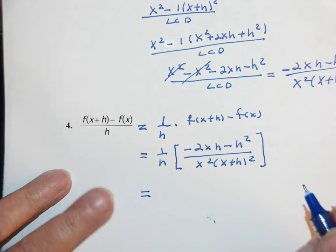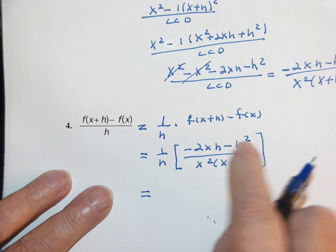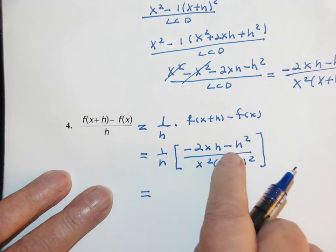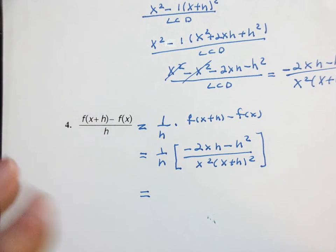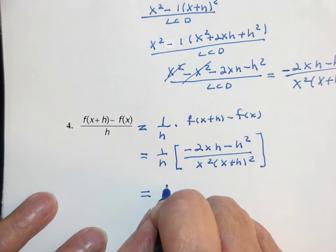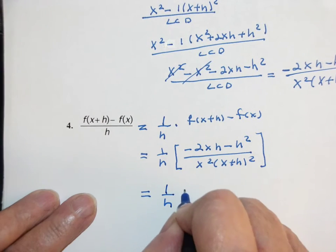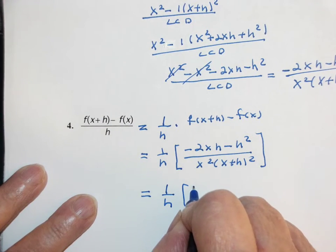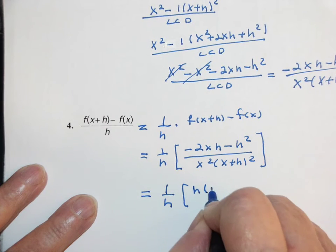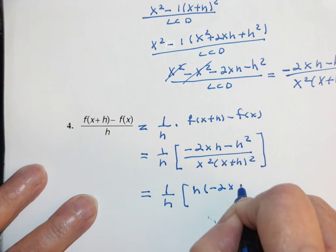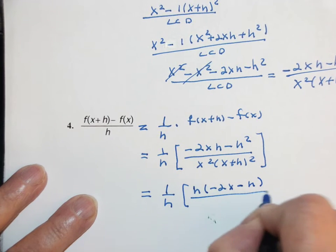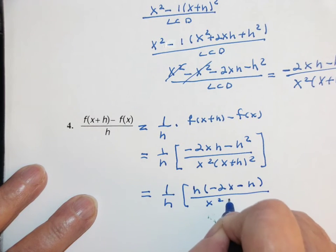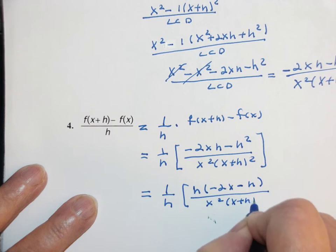I can factor out a greatest common factor. Right now I have a 0 over 0 form. If h equals 0 that would be 0. This is the algebra. So this is 1 over h times h times negative 2x minus h all over x²(x+h)².